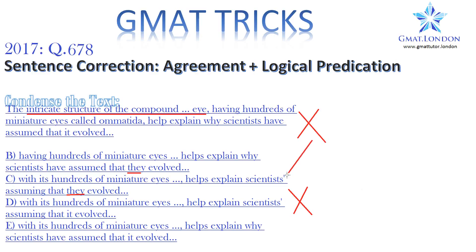So B and C are wrong because they imply the scientists evolved, and we're left with E because it has both correct elements: 'helps' because it's a singular noun — the intricate structure — and 'it evolved,' not the scientists.